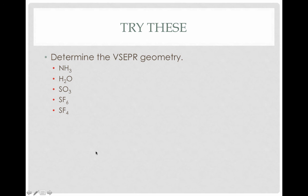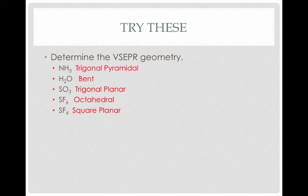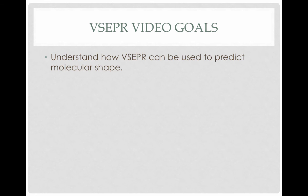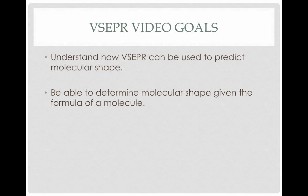Here are some structures to try on your own. Pause the video, draw the Lewis structure for each molecule, and try to predict the VSEPR geometry. When you come back, I'll display the answers. Here's what you should have gotten, along with a summary sheet giving all the different combinations of bonding and non-bonding domains with the molecular shape and some examples. To review our goals: we looked at how VSEPR can be used to predict molecular shape by assuming electron pairs want to be as far away from each other as possible. We learned how to determine molecular shape from a formula by drawing its Lewis structure and counting bonding and non-bonding domains. Finally, we started learning how to visualize molecules three-dimensionally — an important skill going forward.